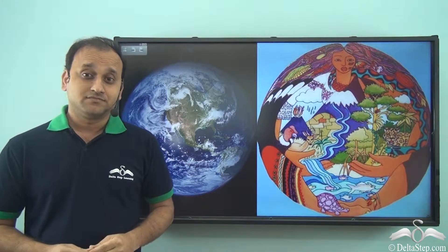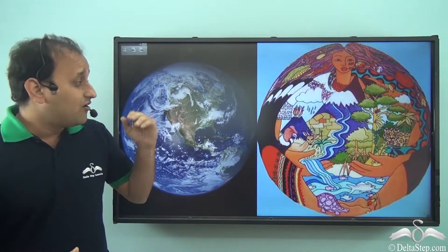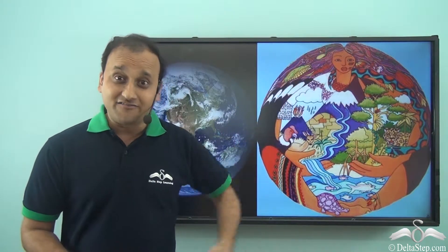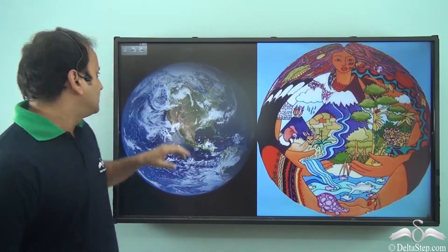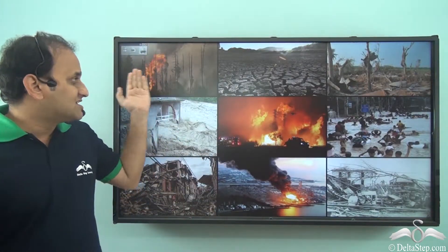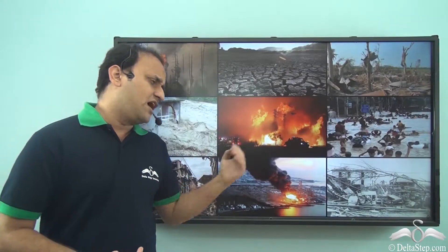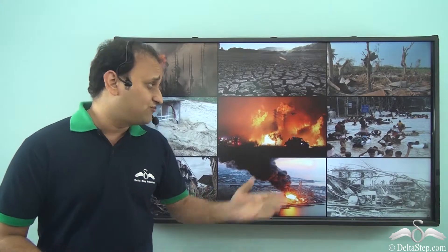This is our Earth, and our Earth provides all the necessary elements for survival of different living beings. Mother Earth takes care of all her children, and it is because of her love and care that we all are able to survive on this planet. But many times there are such incidents or natural disasters which wreak havoc in the lives of Mother Earth's children. Then why is it that sometimes children of Mother Earth have to suffer so much?